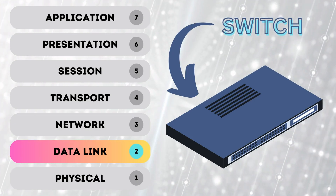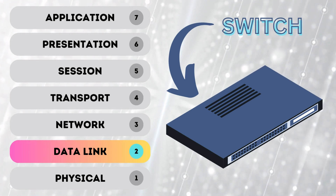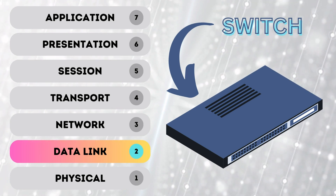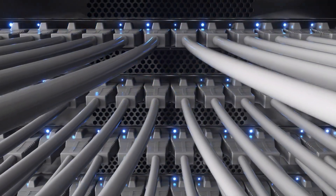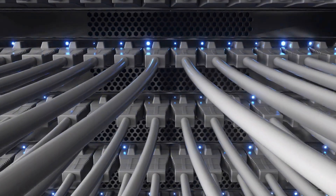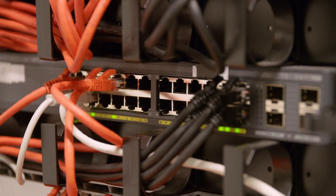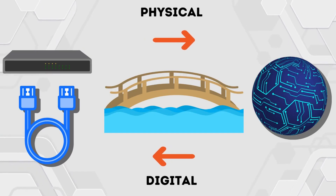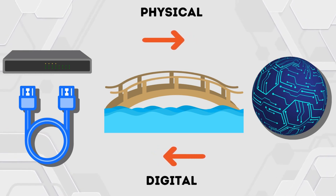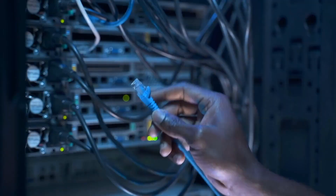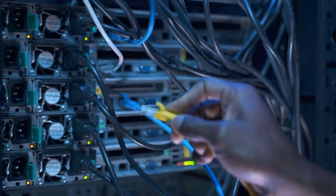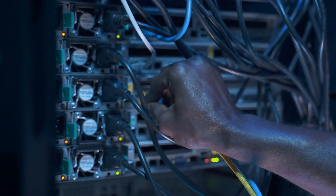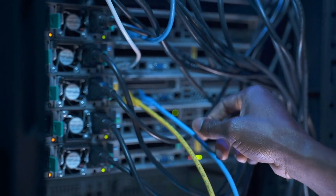Layer 2 is the Data Link Layer. The Data Link Layer is responsible for ensuring the reliable delivery of data between two devices on the same network. This layer provides error detection and correction mechanisms to ensure that data is not corrupted during transmission. Devices on this layer include switches, bridges, and wireless access points. Think of it as the bridge between the digital world and the physical cables — taking electrical signals and turning them into binary and very basic data so that information can actually be transmitted.